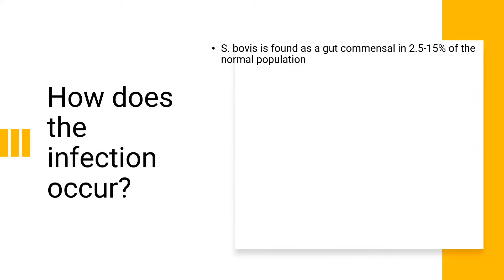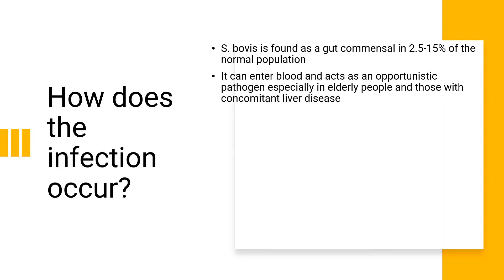Where do you find Streptococcus bovis? Streptococcus bovis is found as part of the normal gut flora in 2.5 to 15% of the population, meaning 2.5 to 15% of the population carries the organism in their gut. But in some patients — especially elderly people and those with chronic liver diseases — the organism can enter the bloodstream and act as an opportunistic pathogen.